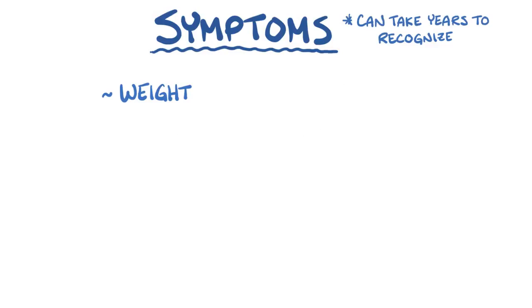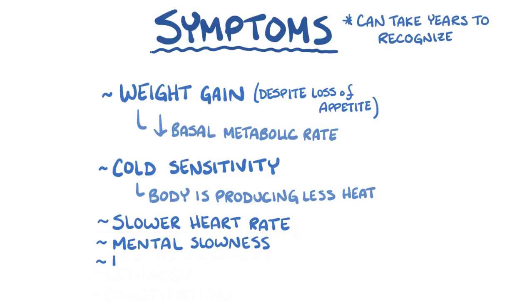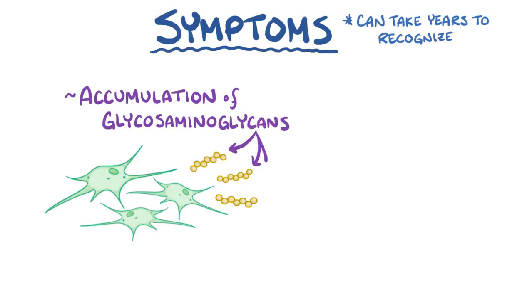The symptoms of hypothyroidism, which can take years before they're even recognized, include weight gain despite a loss in appetite because of the lower basal metabolic rate, cold sensitivity because the body is producing less heat, as well as slower heart rate, mental slowness, lethargy, and constipation because of the decreased effect of thyroid hormones on the sympathetic nervous system. Accumulation of glycosaminoglycans also causes myxedema, or swelling in the skin and soft tissues like the tongue.